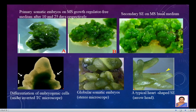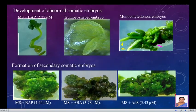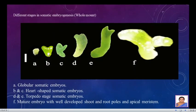When we took the hard callus and placed it on the maturation medium, many changes were observed. Under a stereo microscope, differentiation of the embryogenic callus was visible. Globular somatic embryos started to appear, and then heart-shaped somatic embryos were also observed. One drawback of this regeneration method is high genetic modifications — many abnormal somatic embryos also developed. Instead of maturing into a plant, some somatic embryos started to produce numerous secondary somatic embryos in large amounts.